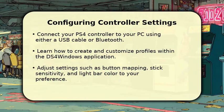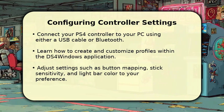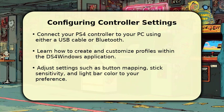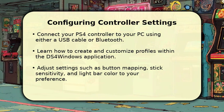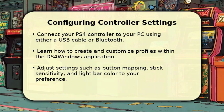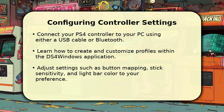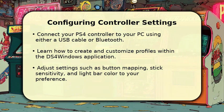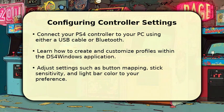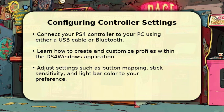Once DS4Windows is installed, connect your PS4 controller to your PC. You can do this using a USB cable or via Bluetooth. Open DS4Windows, and it should detect your controller. Here, you can create custom profiles, allowing you to map buttons, adjust stick sensitivity, and even set up macros for specific games. Experiment with different settings to find what feels most comfortable for you. Saving your profiles ensures your preferred configurations are always ready.